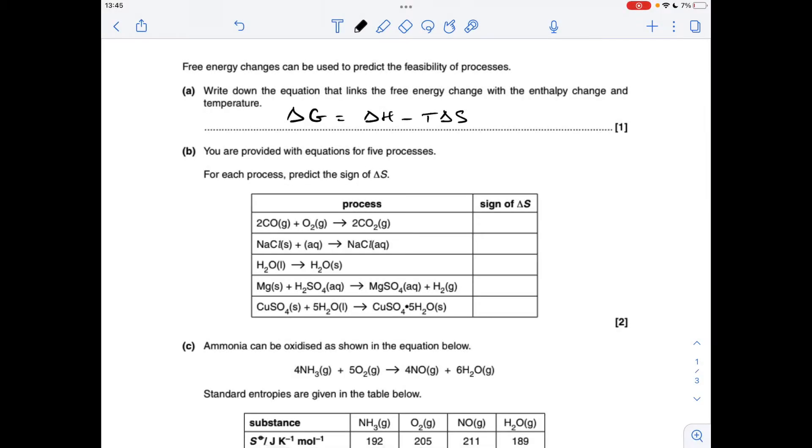So part A, the equation is obviously the Gibbs equation, so it's ΔG = ΔH - TΔS.